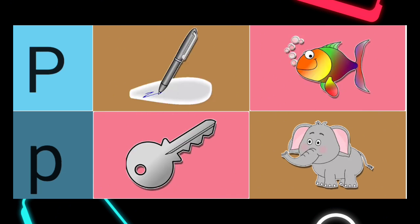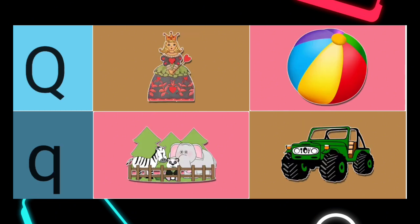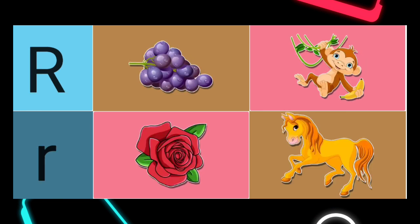O is for. Right answer: O is for Owl. P is for. Right answer: P is for Pen. Q is for. Right answer: Q is for Queen.